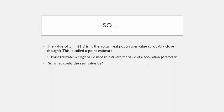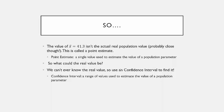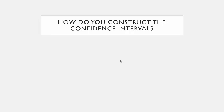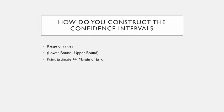What could the real mean age of the civilian labor force be? We can't ever really know the real value, so we use a confidence interval. Recall that a confidence interval is a range of values used to estimate the value of a population parameter. So how do you construct these confidence intervals? A confidence interval is a range of values, so it has a lower bound and an upper bound, and it's all the values in between.